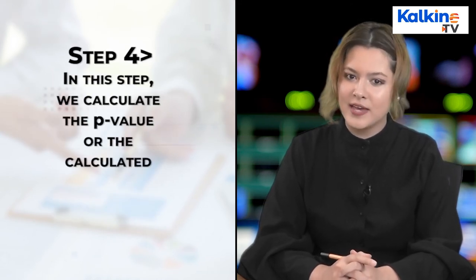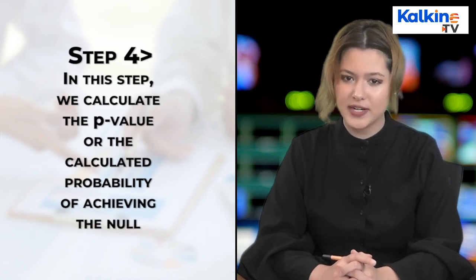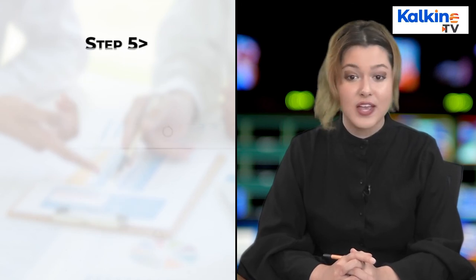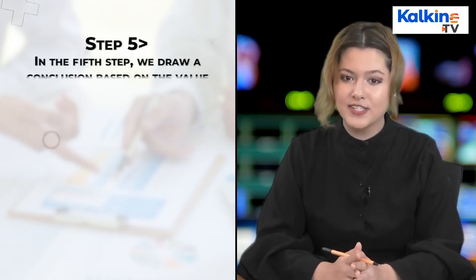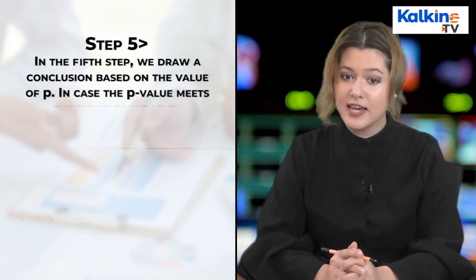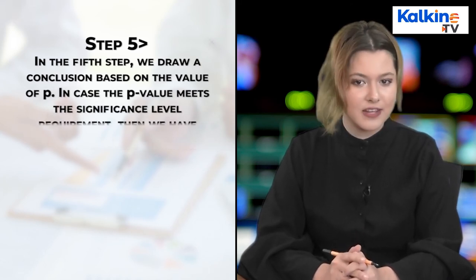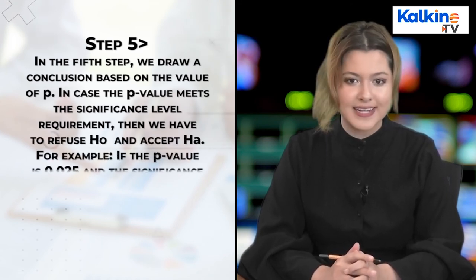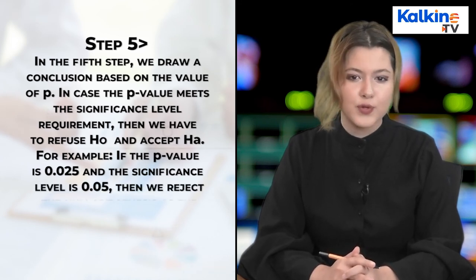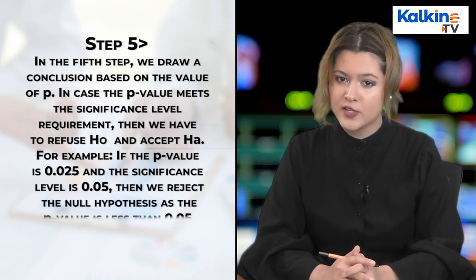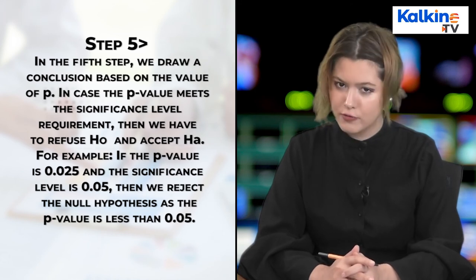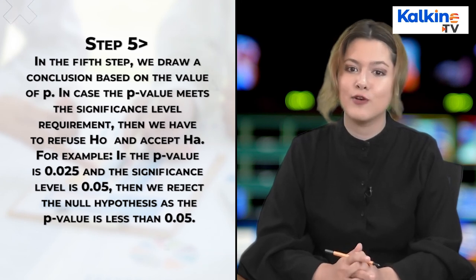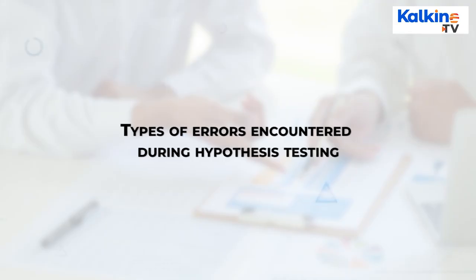Step four: calculate the p-value, or the calculated probability of achieving the null hypothesis. Step five: draw a conclusion based on the value of p. If the p-value meets the significance level requirement, we refuse H0 and accept H-a. For example, if the p-value is 0.025 and the significance level is 0.05, then we reject the null hypothesis because the p-value is less than 0.05.